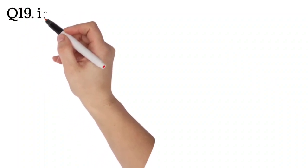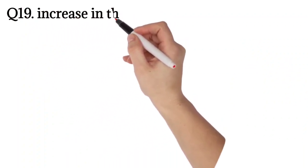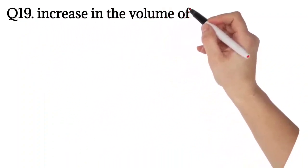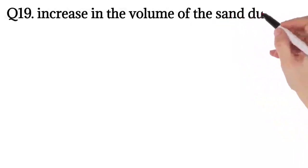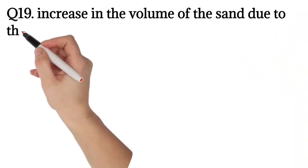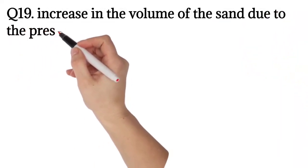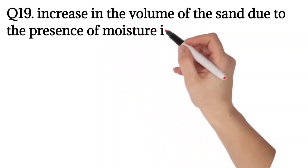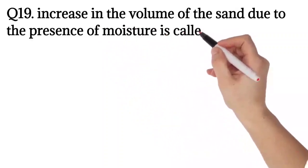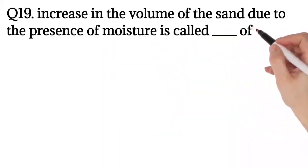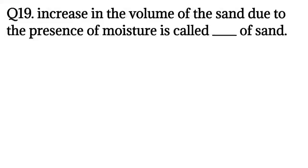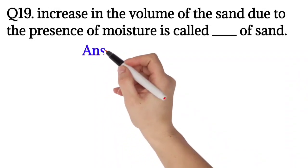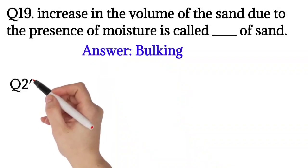Question number nineteen: the increase in the volume of sand due to the presence of moisture is called bulking of sand.